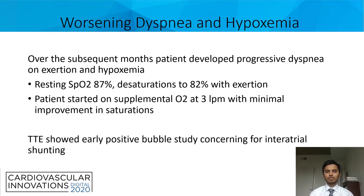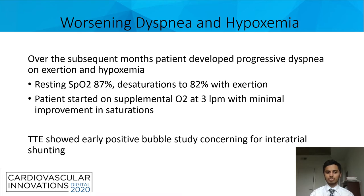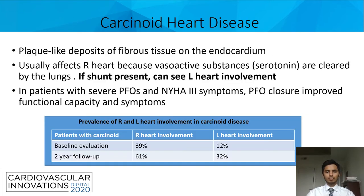Over the next few months, however, she began developing worsening dyspnea on exertion and hypoxemia. Her resting SpO2 was 87%, desatting to 82% with exertion. She was started on supplemental oxygen with minimal improvement in her saturations. She had an echo done which showed an early positive bubble study, concerning for interatrial shunting.